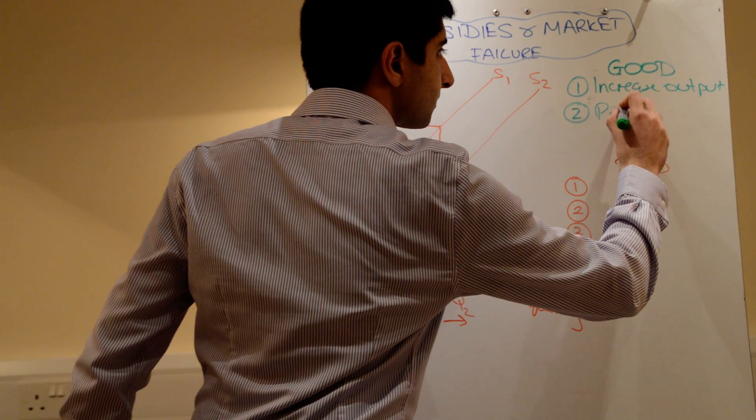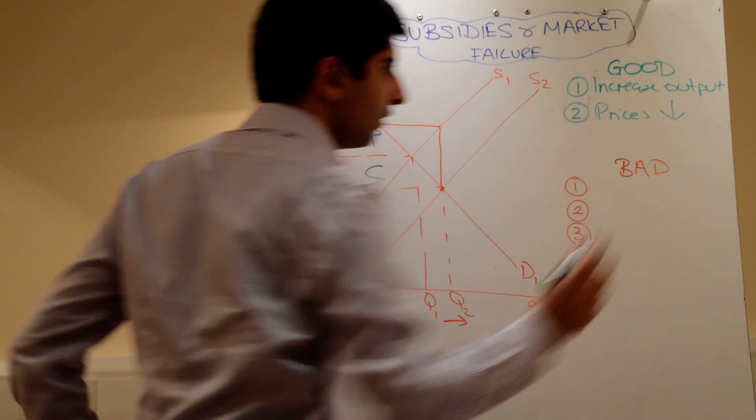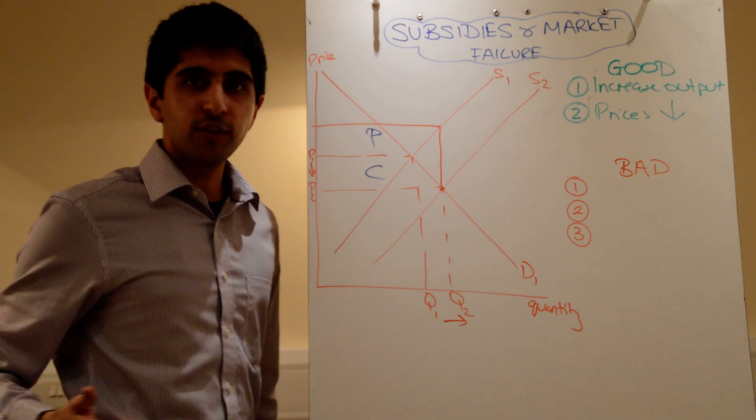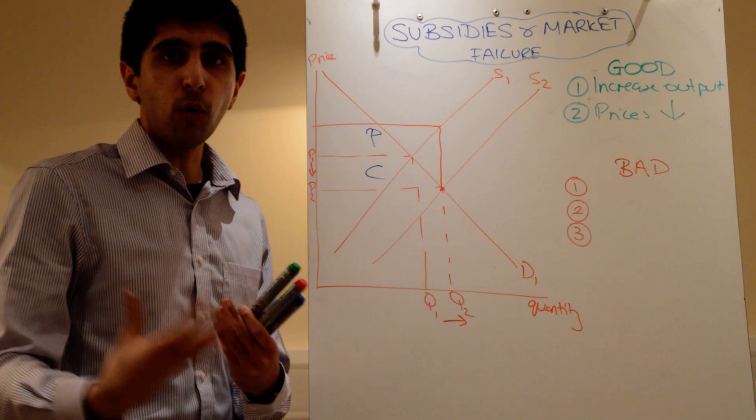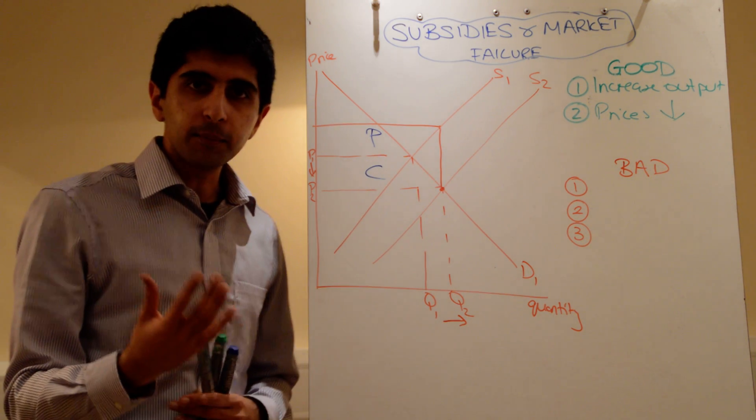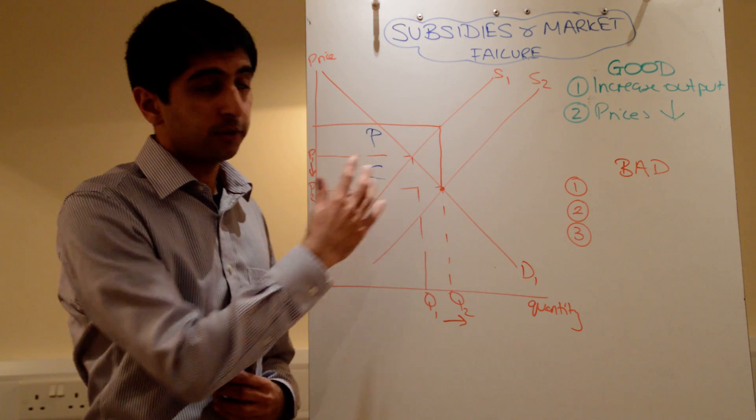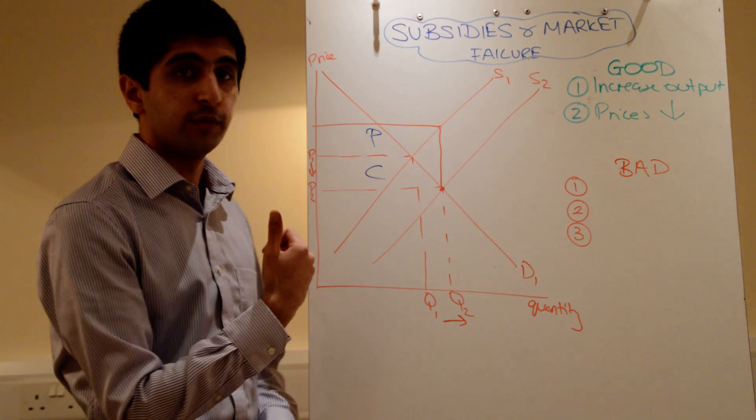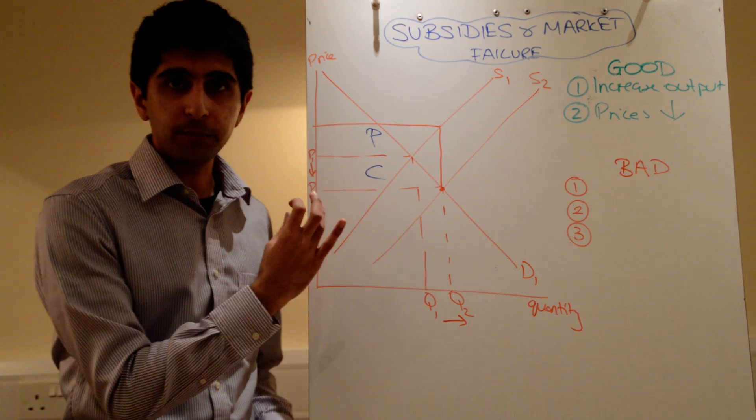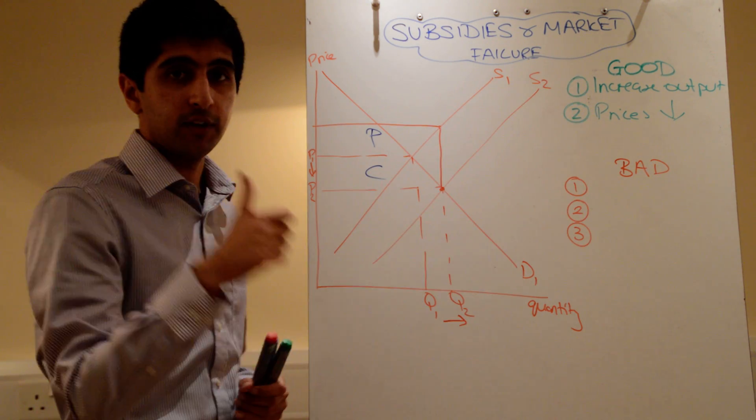At the same time, prices fall. As prices fall, there's an extension of demand. So, hopefully now consumers will buy more of whatever this is. If it was a merit good, and we have under-consumption problems, well, hopefully subsidies can solve the under-consumption through the reduced prices. So, any under-production issues, any under-consumption issues can be solved via a subsidy. Good thing.